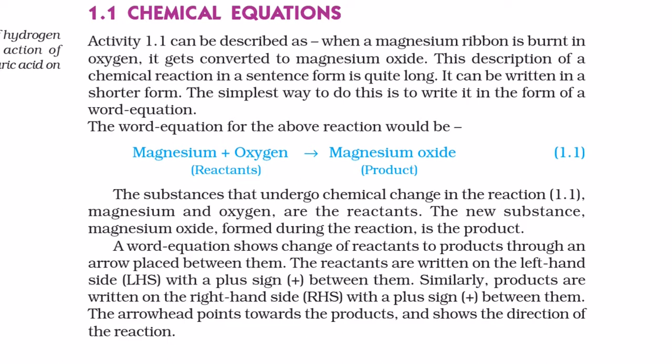1.1 Chemical equations. Activity 1.1 can be described as when a magnesium ribbon is burned in oxygen it gets converted to magnesium oxide. This description of a chemical reaction in a sentence form is quite long. It can be written in a shorter form. The simplest way to do this is to write it in the form of a word equation. The word equation for the above reaction would be magnesium plus oxygen gives magnesium oxide. The substances that undergo chemical change in the reaction, magnesium and oxygen, are the reactants. The new substance, magnesium oxide, formed during the reaction is the product. A word equation shows change of reactants to products through an arrow placed between them. The reactants are written on the left hand side with a plus sign between them. Similarly, products are written on the right hand side with a plus sign between them. The arrow head points towards the products and shows the direction of the reaction.